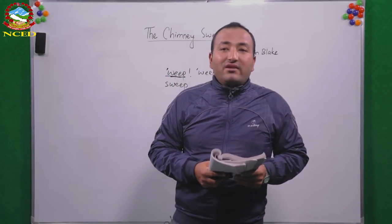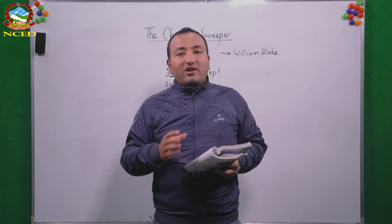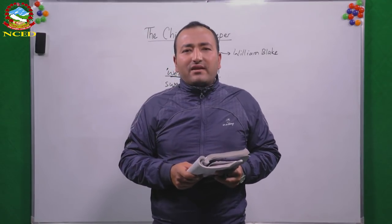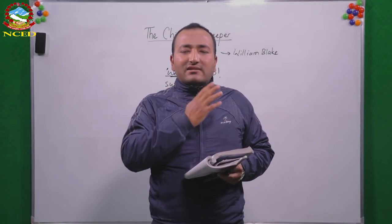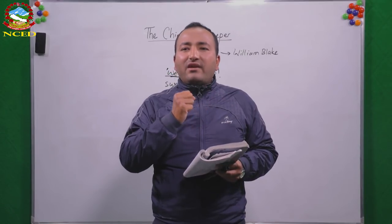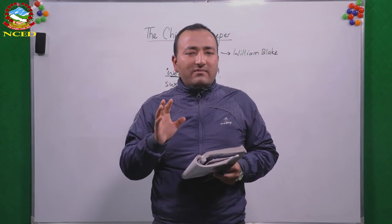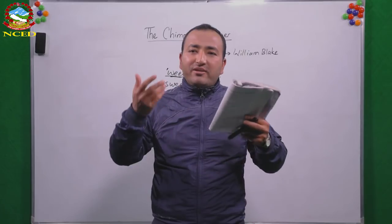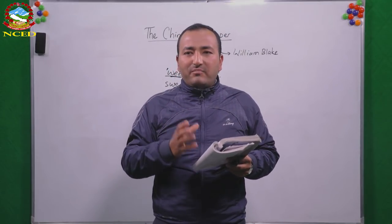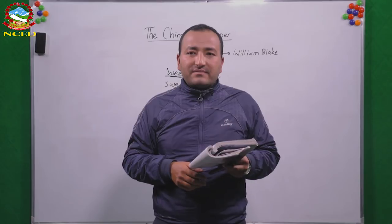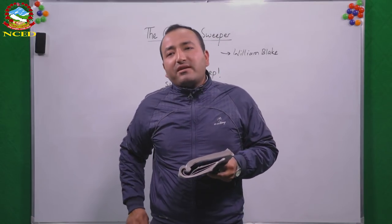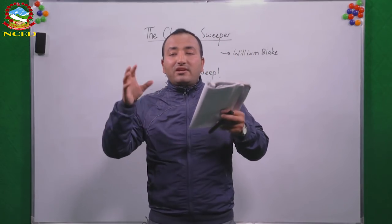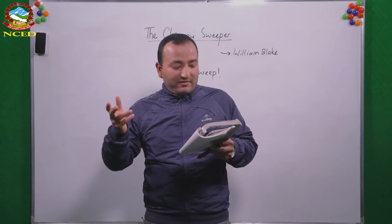But you children may not understand each and everything this poem is trying to say. Simply try to understand: they are working under such pressure, under such conditions. They are chimney sweepers — chimney sweeping is not a good job. Only their dream is to be free from such barriers, such conditions. That's why Tom Dacre is having this dream of seeing young children jumping, running, and enjoying freedom — because they wanted what they just got in the dream, what they wanted to do.